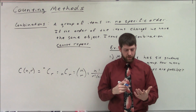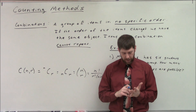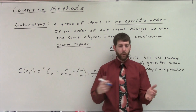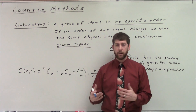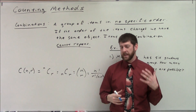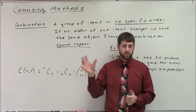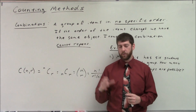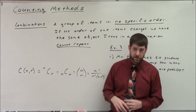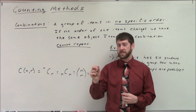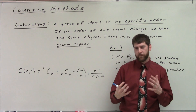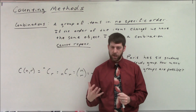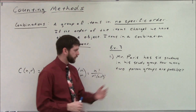Combination can be a confusing word. If I say 'how many combinations of pizza toppings' — that fits, because the order you put them on doesn't change what's on the pizza. But 'what's the combination to this lock' is actually a permutation, because changing the order of the numbers means it won't open. If order matters, it's a permutation; if it doesn't, it's a combination.